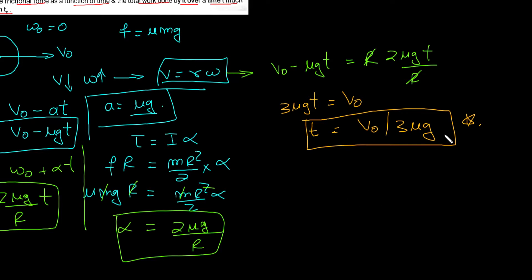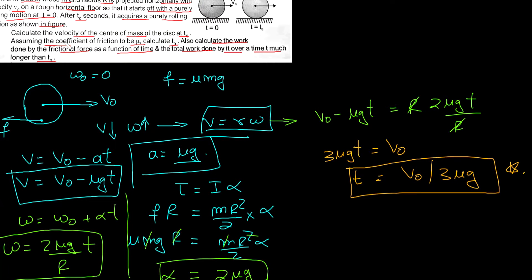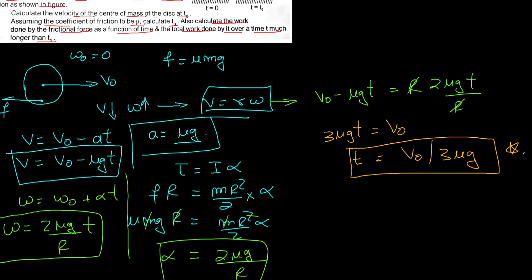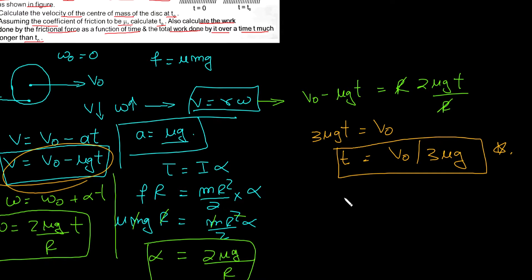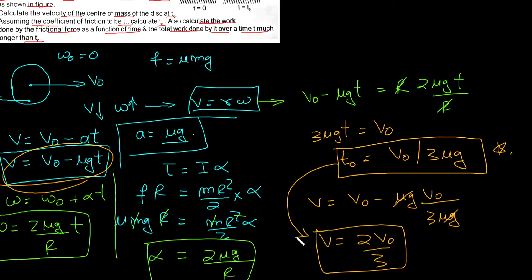So that was the first part - we found t naught. Now for the velocity of the center of mass at t naught: using v = v₀ - μg·t and substituting t = v₀/(3μg), we get v = v₀ - μg·(v₀/3μg) = v₀ - v₀/3 = 2v₀/3. So the velocity at t naught is 2v₀/3.